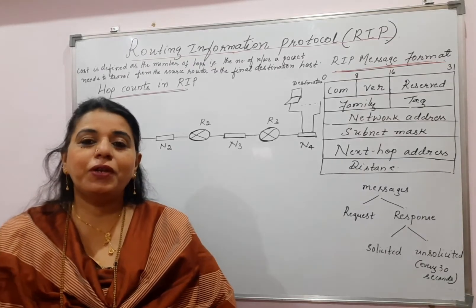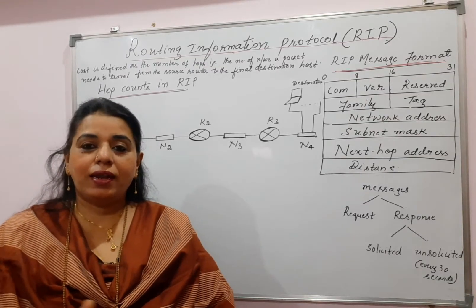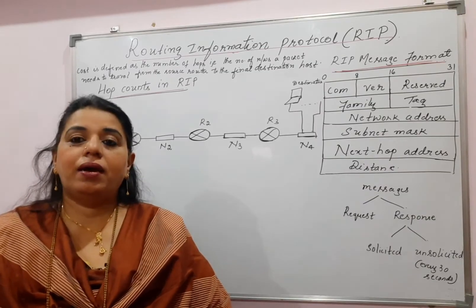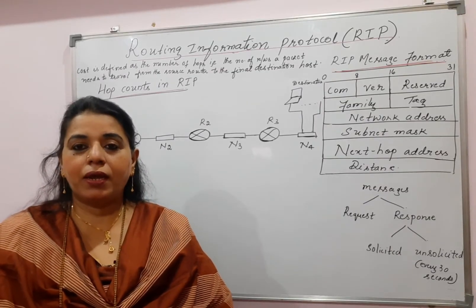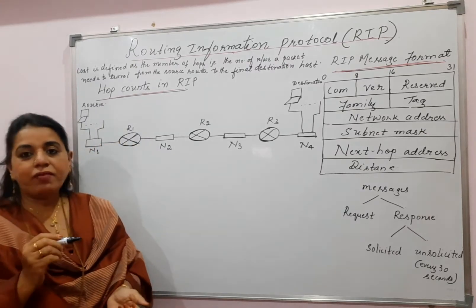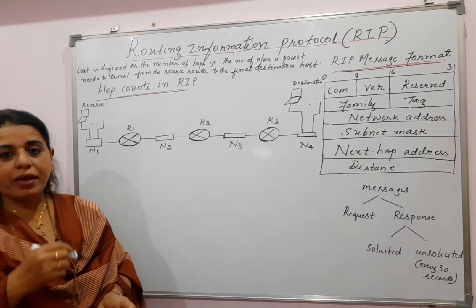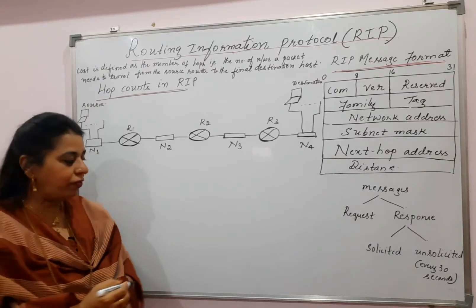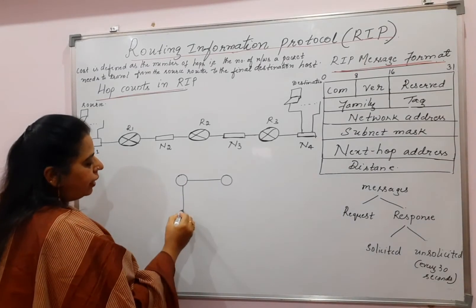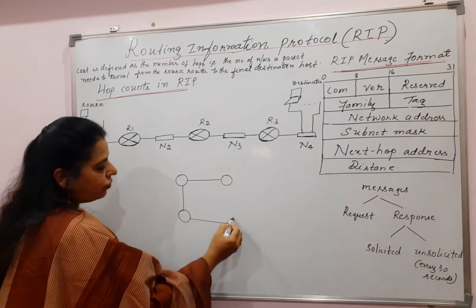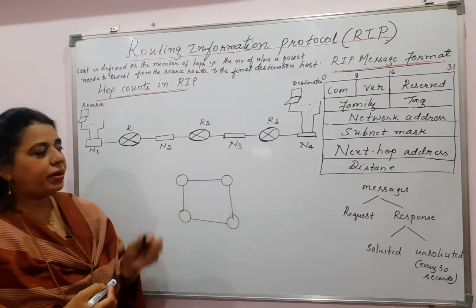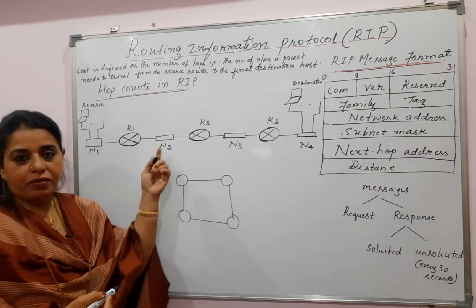Continuously for the past 3 to 4 video lecture sessions, I have been telling you about distance vector routing and to solve any problem on distance vector routing algorithm, always in the question there was a graph given — not the actual network. We are representing the network with a weighted graph, where routers are represented as vertices of the graph and the edges indicate the links, the different networks present in the network.